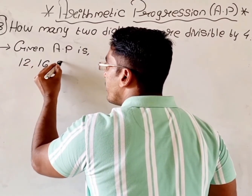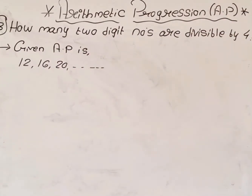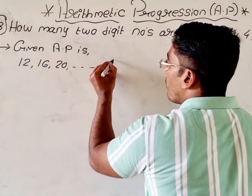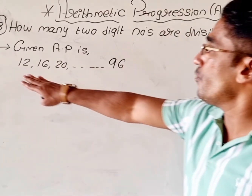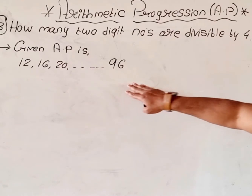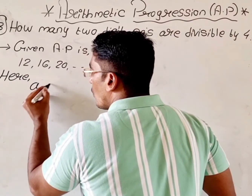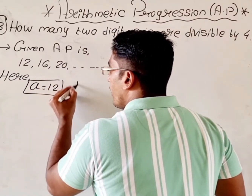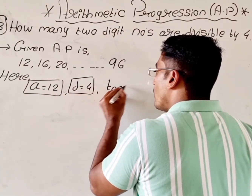The next terms will be 16, 20, and so on. Now, which is the last two-digit number divisible by 4? We check: 99 — no; 98 — no; 97 — no; 96 — yes. So our AP is 12, 16, 20, and so on up to 96. We have to find how many terms are in this AP. Here A = 12, D = 16 − 12 = 4, and T(N) = 96.